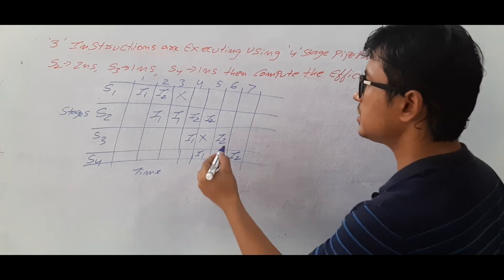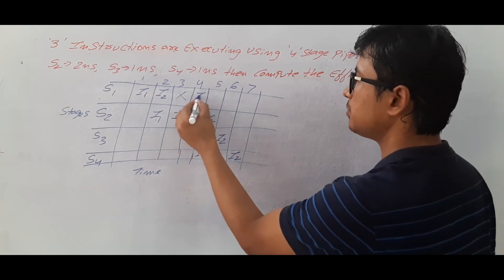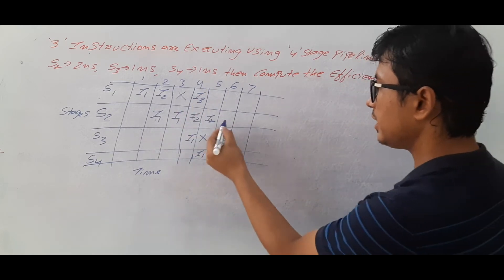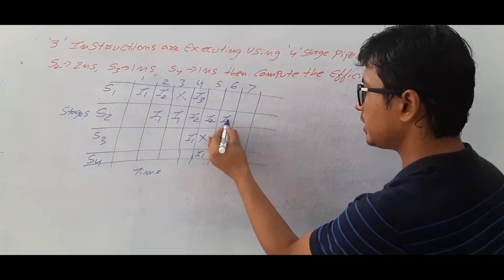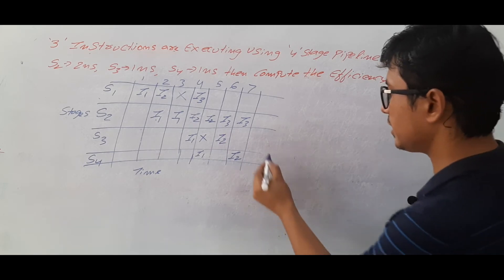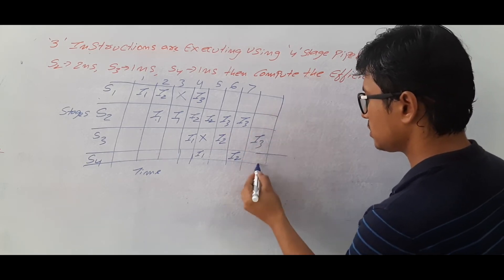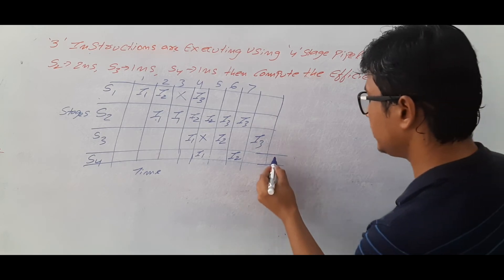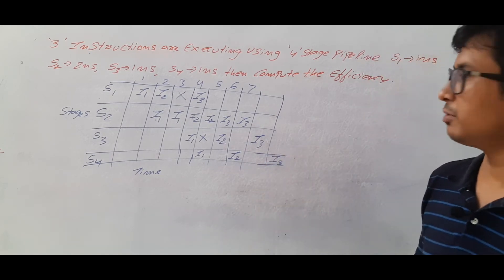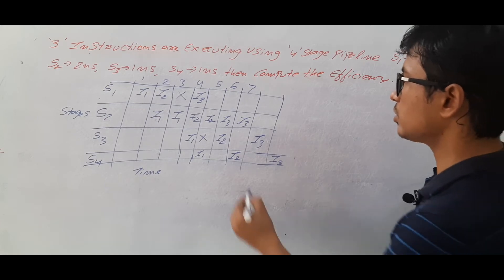When instruction three comes into stage one, it then moves forward and performs for two nanoseconds in stage two, then proceeds to stage three and stage four.